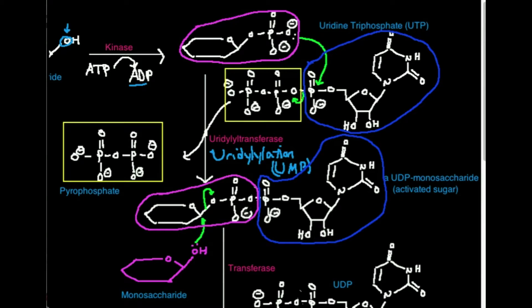When you do this on some molecule like this, a phosphorylated monosaccharide, and you perform a uridylyltransferase reaction, what you ultimately get is a UDP monosaccharide.